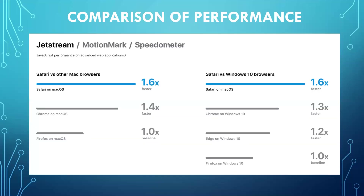Comparing Safari's performance with other Mac browsers, Safari is 1.6 times faster than Chrome on Mac OS and Firefox on Mac OS. When comparing Safari versus Windows 10 browsers, Safari again achieves the highest performance at 1.6 times faster.